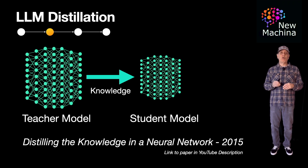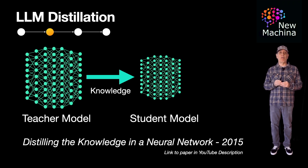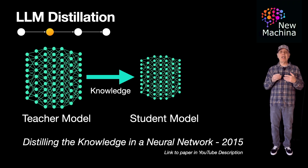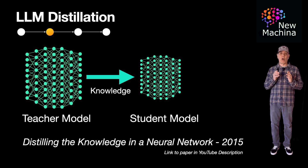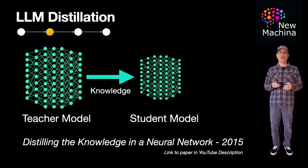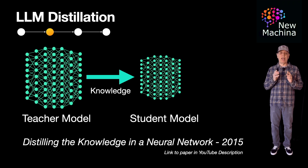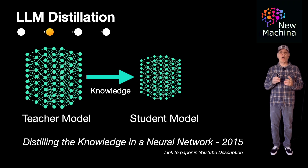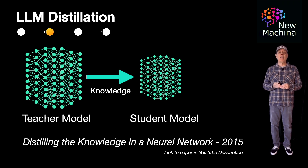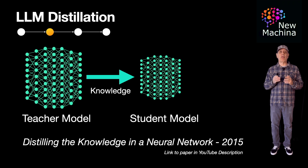In addition to training with soft labels, the student model learns from the ground truth as well. Both of these help the student model capture the reasoning patterns of the teacher rather than just memorizing correct answers. Once the student model learns from the teacher model, it can be fine-tuned further on task-specific datasets. This helps ensure the student model performs well in real-world applications, even if it's much smaller than the teacher.